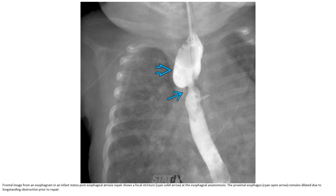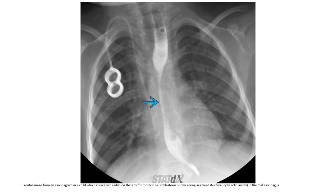A frontal image from an esophagram shows the esophagus remaining dilated due to long-standing obstruction prior to repair. Another frontal image shows a child who received radiation therapy to the thorax, demonstrating a long-segment stricture in the mid esophagus.